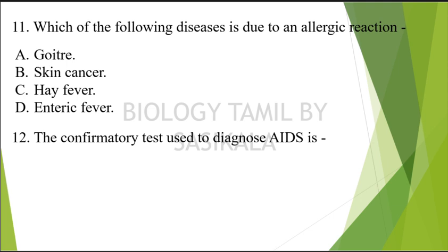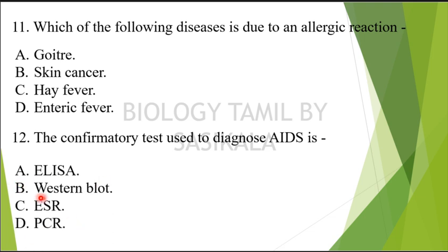Question 11: The confirmatory test used to diagnose AIDS — AIDS has one preliminary test and one confirmatory test. The choices are: ELISA, Western blot, ESR, PCR. What is the confirmatory test? ELISA stands for enzyme-linked immunosorbent assay.